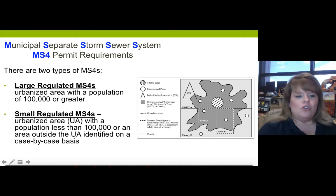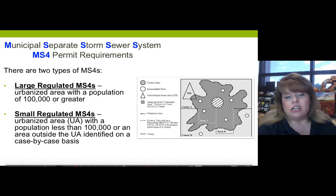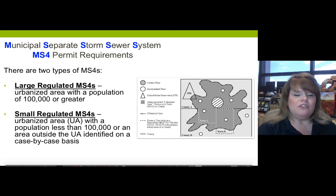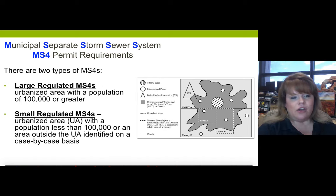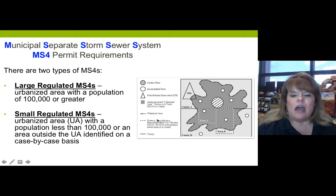There are two types of MS4s: large and small. A large MS4 has an urbanized area with a concentrated population of 100,000 or greater, determined by a formula. A small MS4 is an urbanized area with a population less than 100,000, or an outside area identified on a case-by-case basis. Looking at a stormwater map showing a county, the dark areas are unincorporated areas, and the legend shows which areas are urbanized and which are not. Areas within the urbanized section — whether or not they're a city — still must have an MS4 permit.